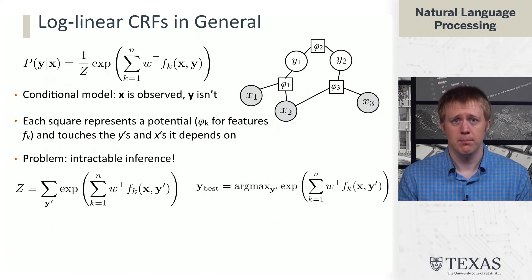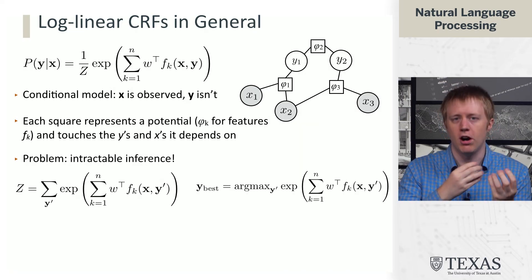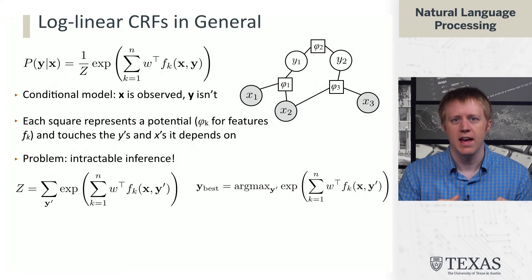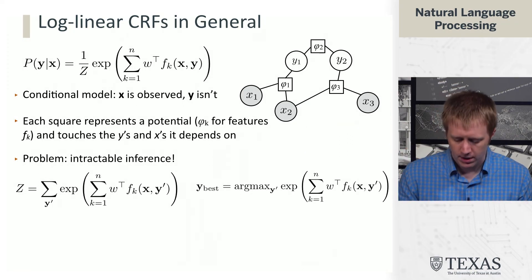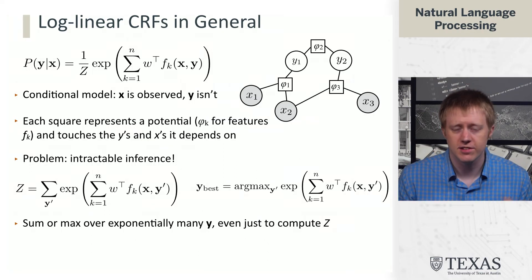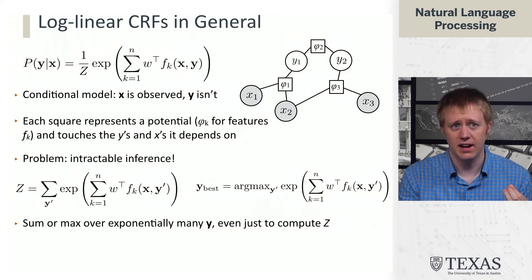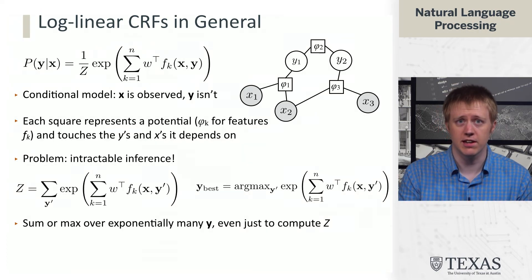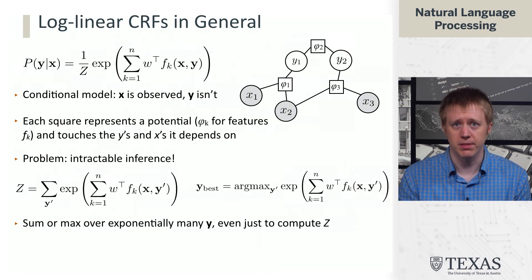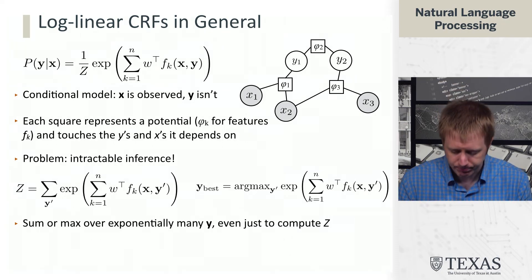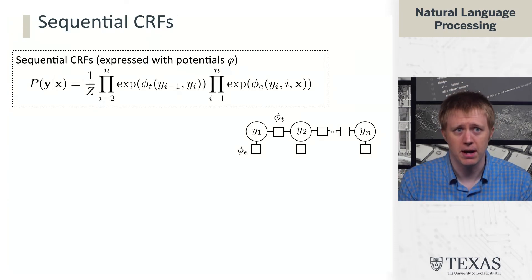And even computing the best, the kind of most likely configuration of variables, again this requires taking an argmax over all possible settings of the Y's, and this is also intractable. So these are going to be exponential time operations in general, and that's not going to work very well. And so this is going to lead us to specialize the CRF to something that looks a little bit more amenable for the NER task. And the way we're going to do that is by using a special form called a sequential CRF.